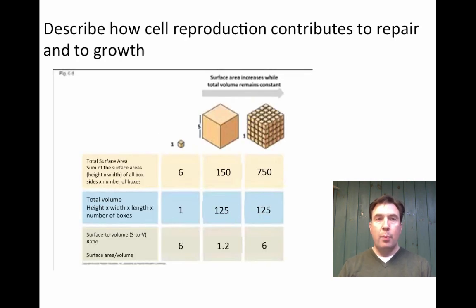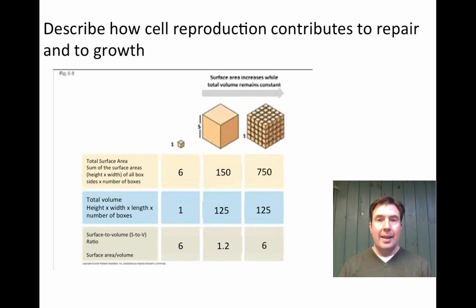Before we get started, it's important to talk about how cell reproduction contributes to repair and growth of a cell. In order to do that, we need to talk about the concept of surface area to volume ratio. One of the important things to think about is: why would a cell divide? What fundamentally happens is that as cells grow larger, as the volume of the cell becomes larger, it grows larger than the amount of surface area it has.